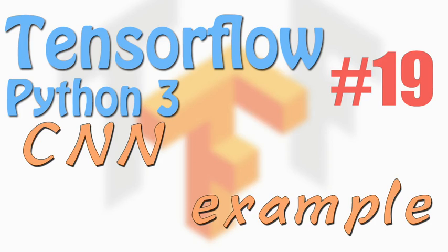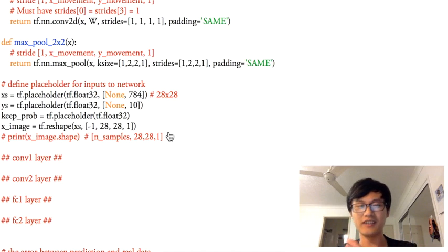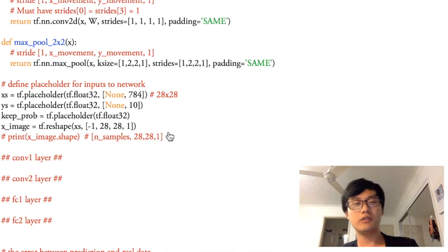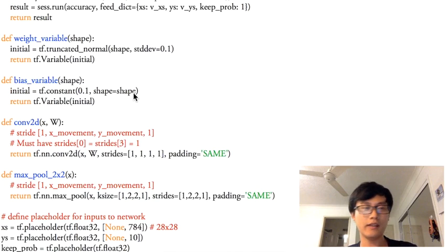Hi everyone, welcome back to the tutorial for TensorFlow series. This time we'll finally go through the CNN — convolutional neural network — and later we'll go through the RNN recurrent neural network as well. So this time we're going to talk about the CNN.